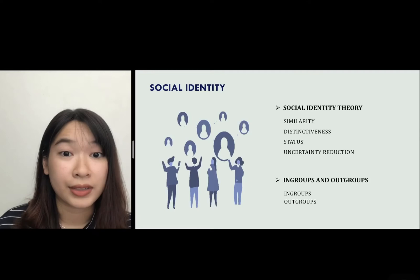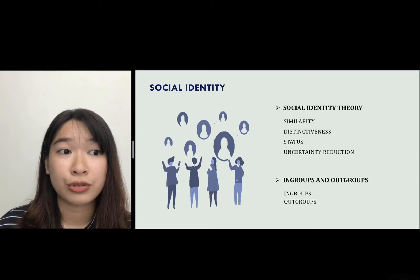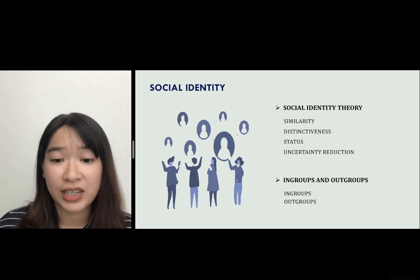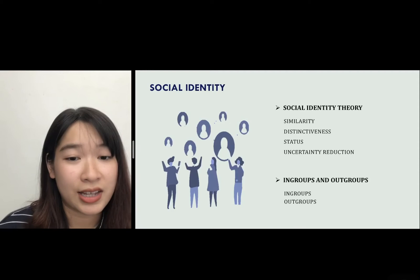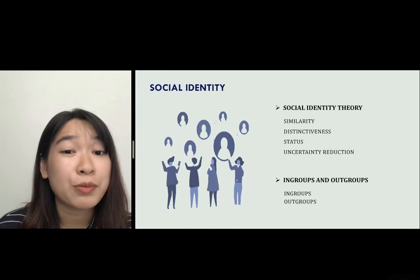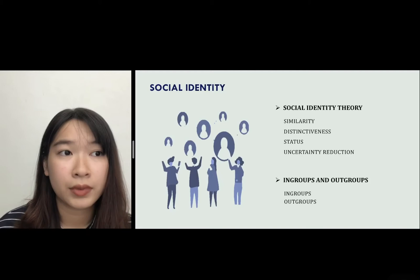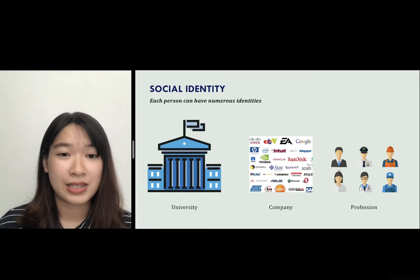Because people's self-esteem is connected to the group, people tend to join a high-status group so that their self-esteem is satisfied. And lastly, people join groups to reduce their uncertainty about who they are and whether they fit in with society. Those are the four elements that social identity theory uses to explain why people join groups. People can have many identities throughout their lifetime — in terms of their university, company, profession, or even gender.